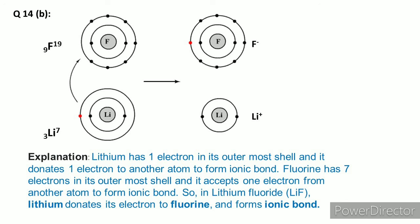Lithium has one electron in its last shell. If lithium gives that electron to fluorine, lithium's last shell becomes empty and the previous shell with 2 electrons becomes its outermost shell, satisfying the octet. Lithium gives its electron to fluorine. Fluorine, accepting the electron, gets a negative charge (minus one). Lithium, having donated the electron, gets a positive charge (plus one). This electron transfer forms an ionic bond, making lithium fluoride (LiF). So lithium has one electron in its outer shell, which it donates; fluorine has 7 electrons and accepts one — the ionic bond is made.